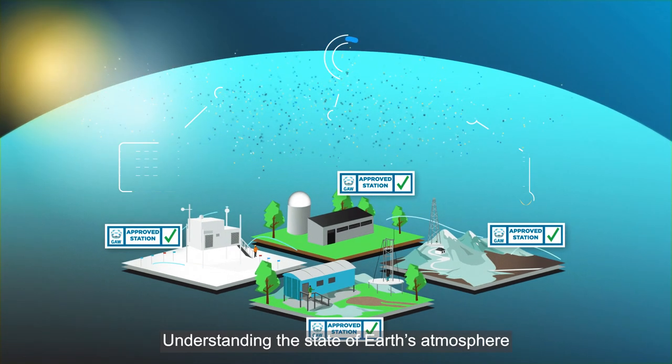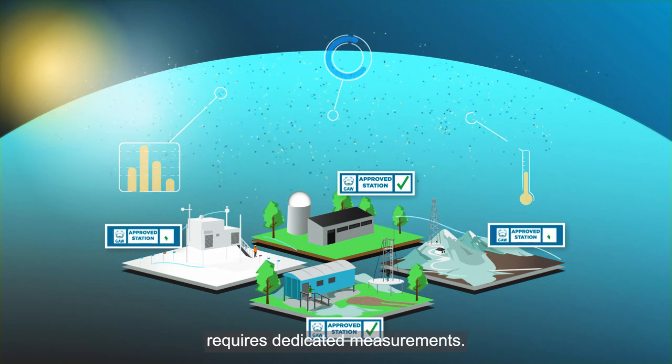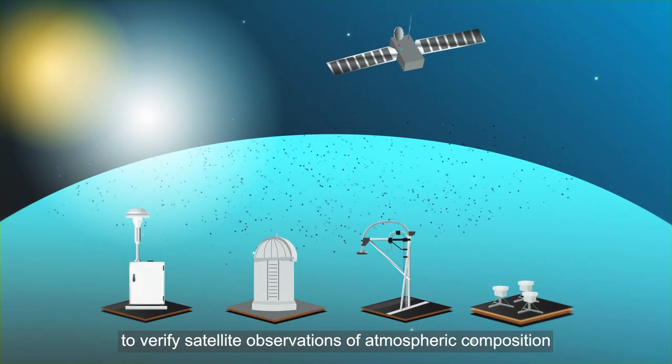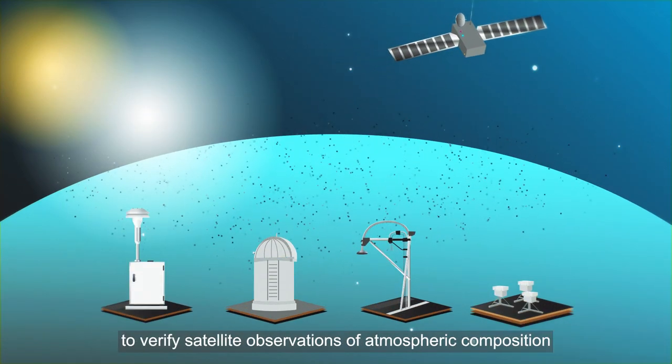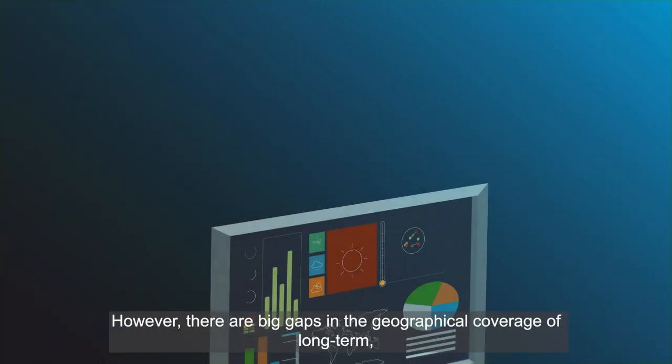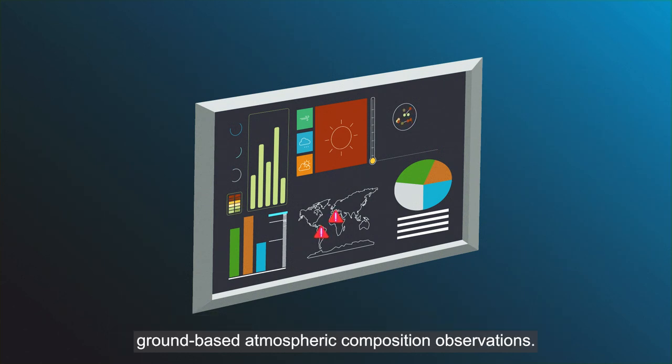Understanding the state of Earth's atmosphere and the changes in atmospheric composition requires dedicated measurements. Ground-based observations are the only way to verify satellite observations of atmospheric composition that provide global overview. However, there are big gaps in the geographical coverage of long-term ground-based atmospheric composition observations.